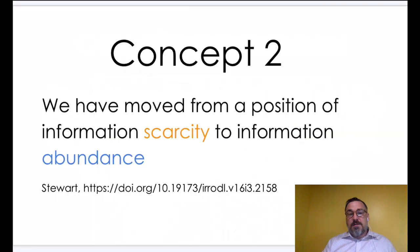The second concept that intersects with that is the distinction between scarcity and abundance, particularly in terms of how it relates to information. In 1974, Herbert Simon wrote an article suggesting we were getting to the point where information was now abundant.